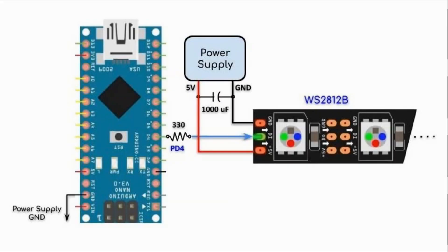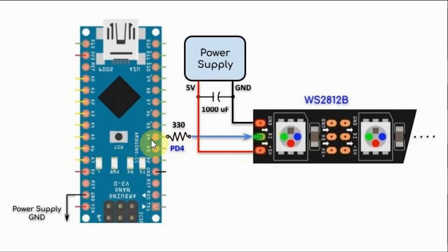The circuit diagram shows the connection of the WS2812B strip with the Arduino, where the D input line is connected to pin PD4 or D4 of the Arduino. We have an external power supply supplying the WS2812B module.